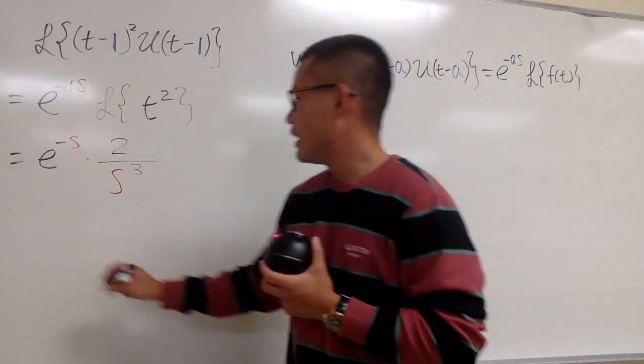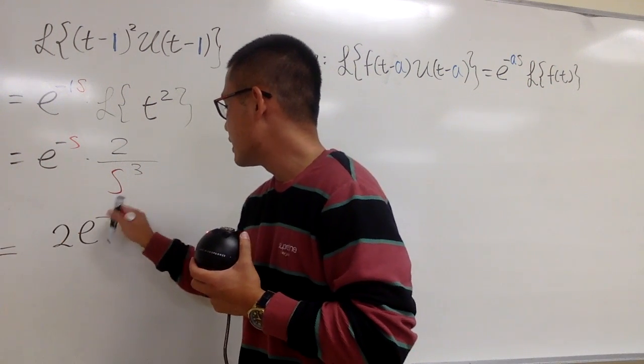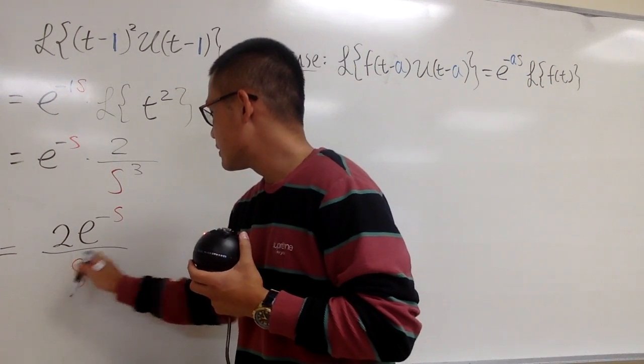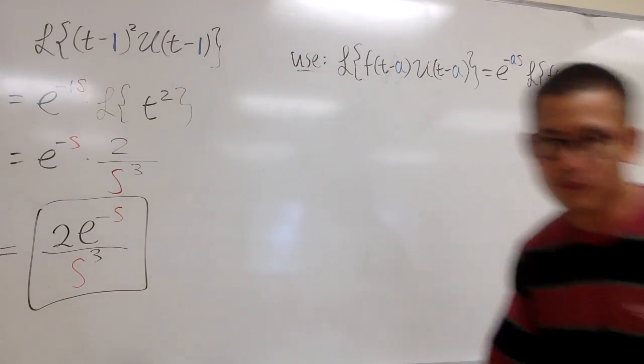And that's pretty much it. At the end, of course, we can write it down together, such as 2e to the negative s over s to the third power. And that's it. We'll be right back. Thank you.